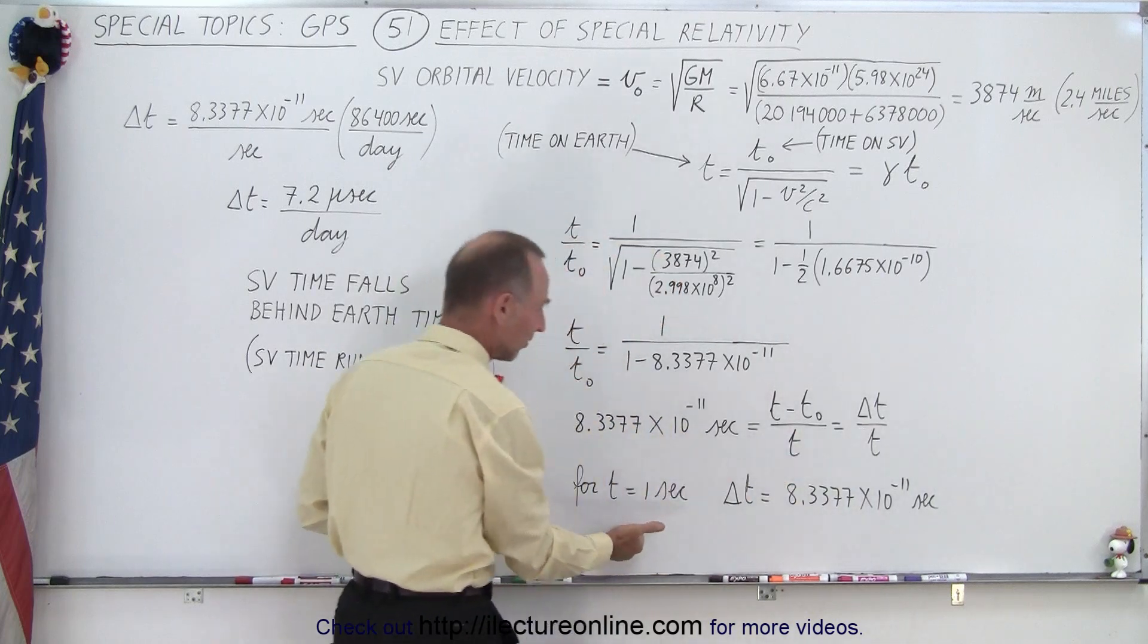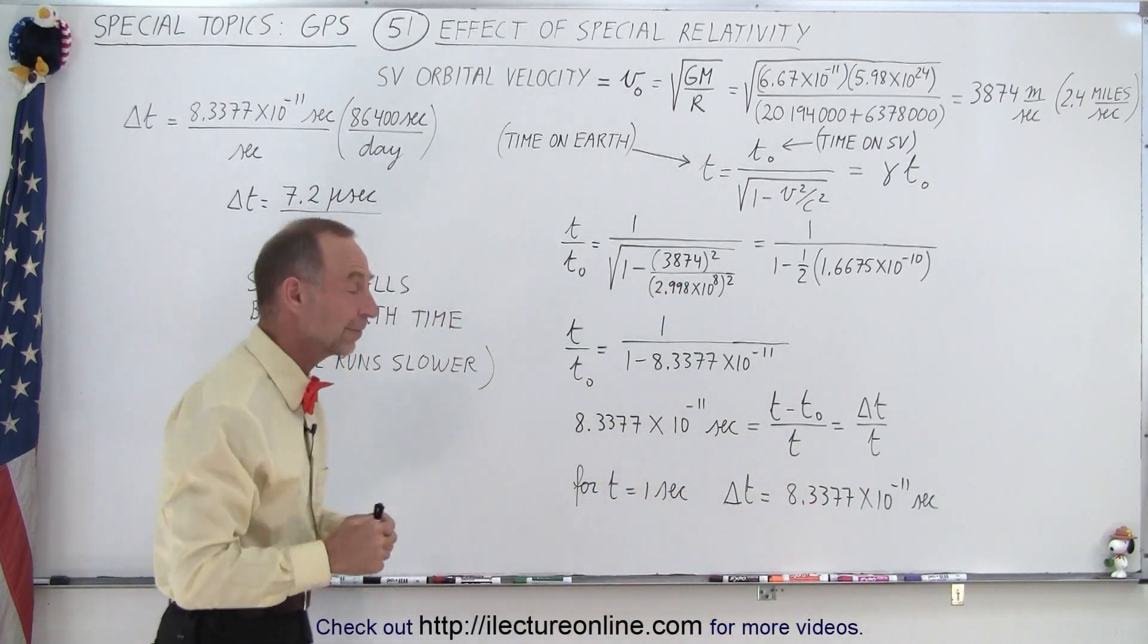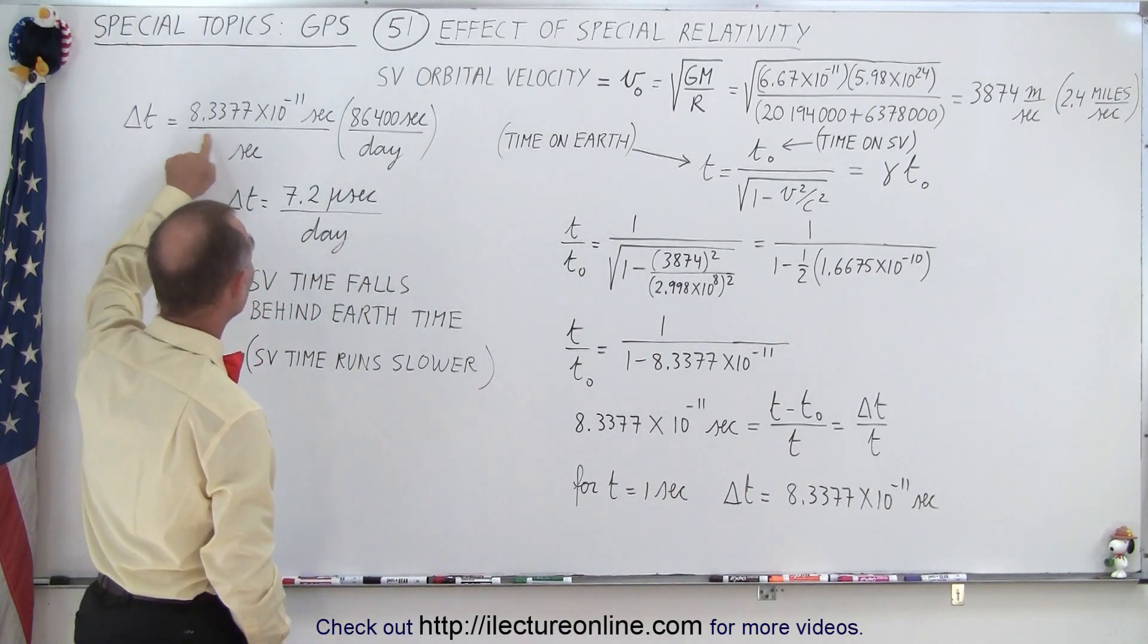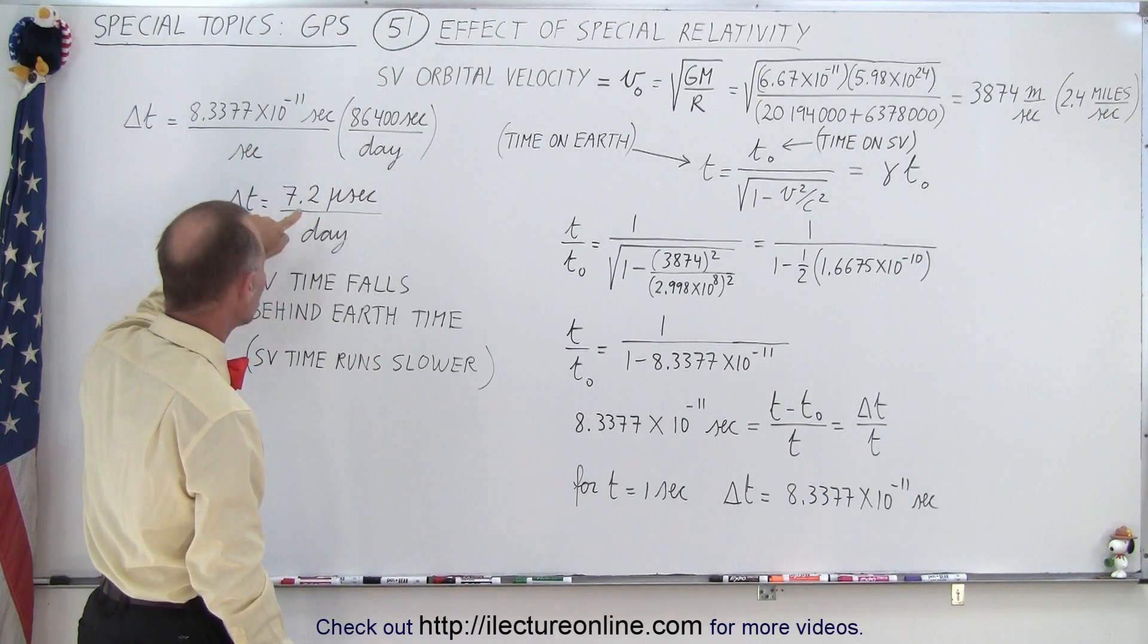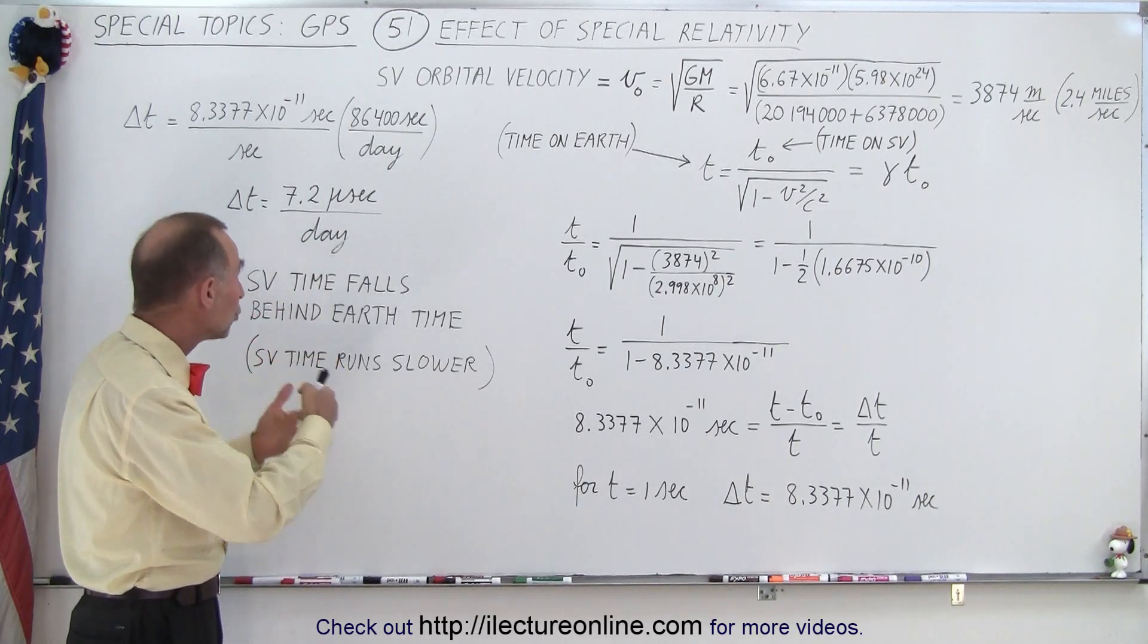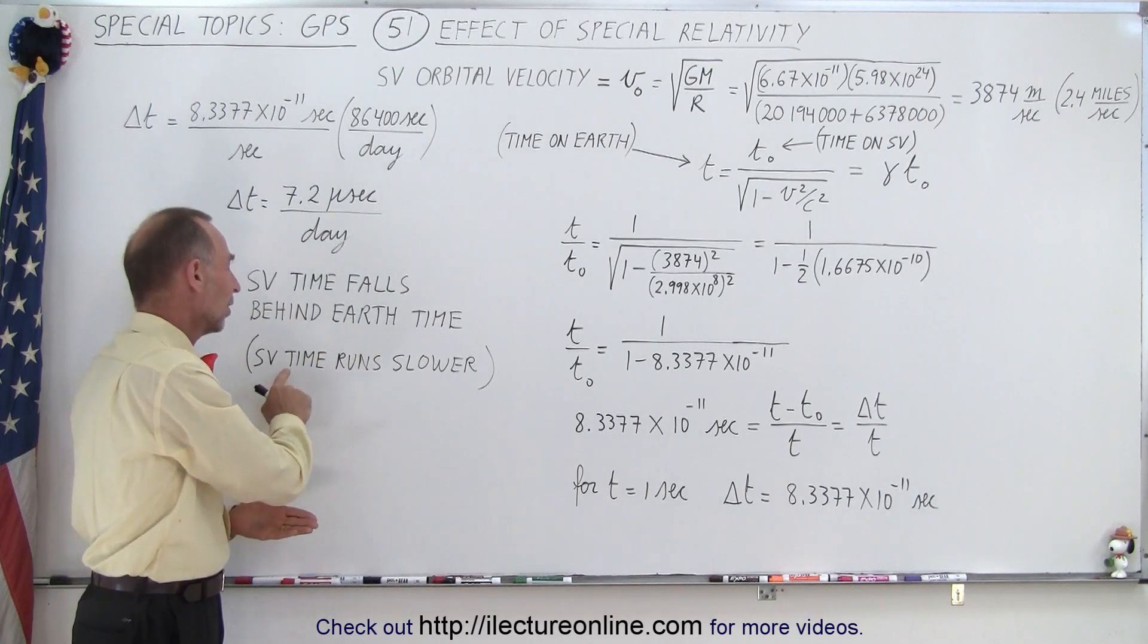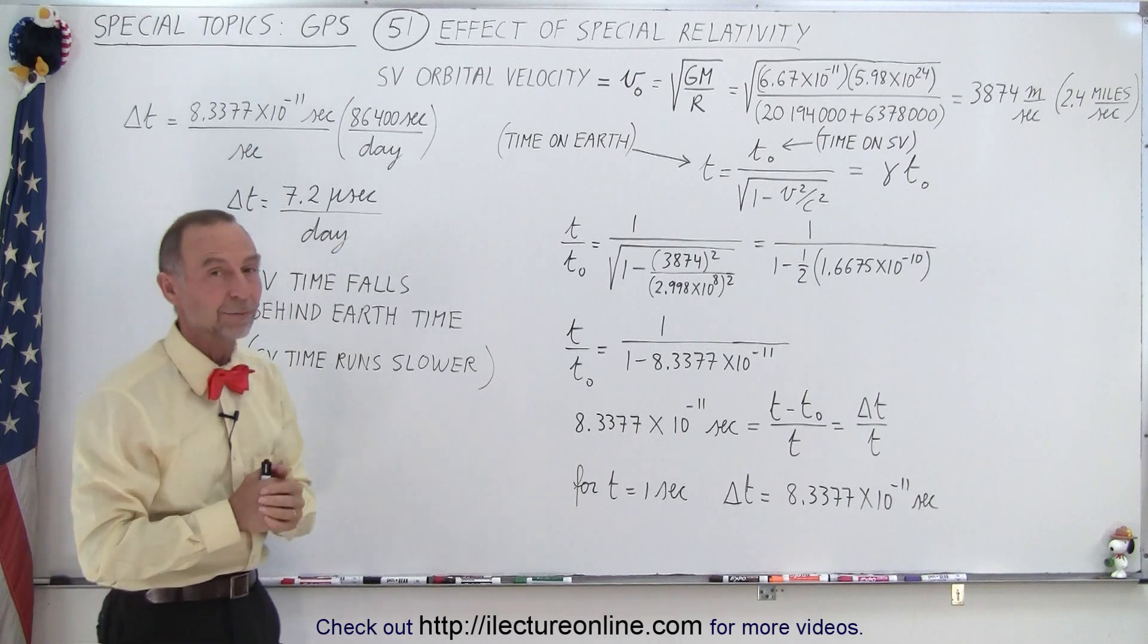We're going to let T equal one second, and therefore we get delta T equal to this per second. If we then calculate that there's 86,400 seconds in a day, we convert that to 7.2 microseconds per day, which means that the time on the satellites runs 7.2 microseconds every day behind the Earth time, so the SV time runs slower by an amount of 7.2 microseconds per day.